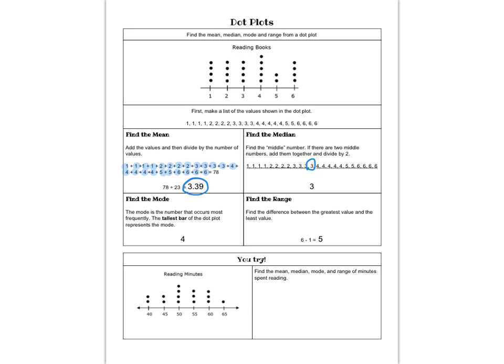The mode is the number that occurs the most. And in this case, that's four. I can tell that four is the mode because it has the tallest bar in my dot plot. It's also the number that shows up five times in my list.